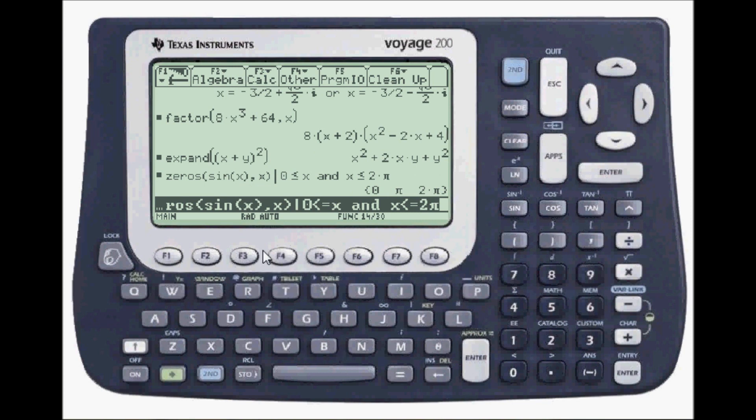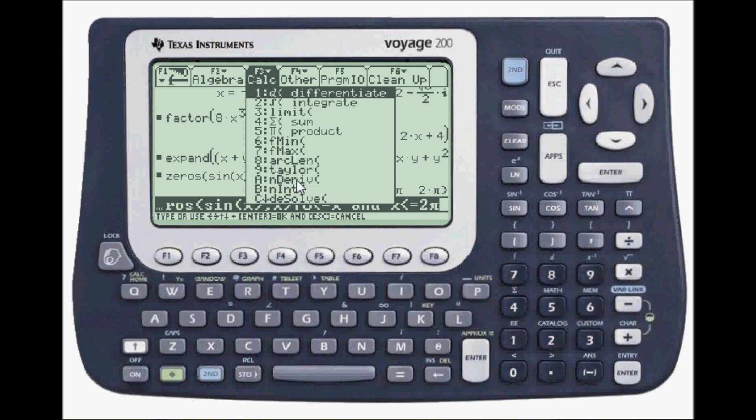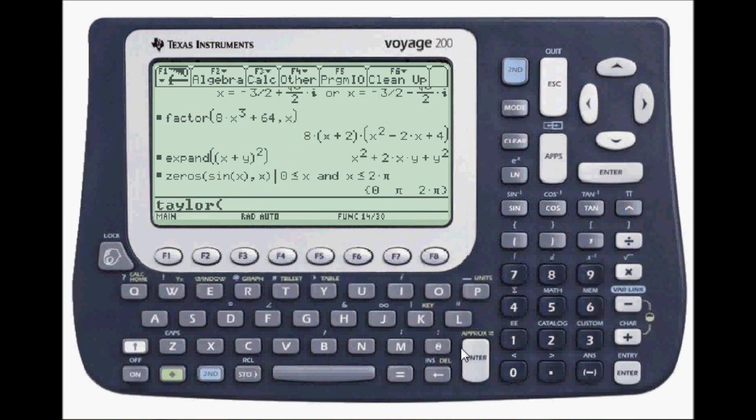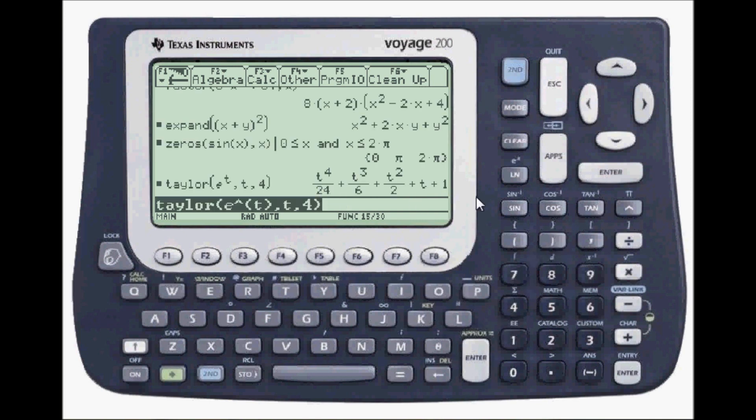Now for Taylor series. Let's go to F3. Taylor is number nine. So, Taylor series. My function will be e to the t. The variable is t. And I want a fourth degree representation. And here that is.